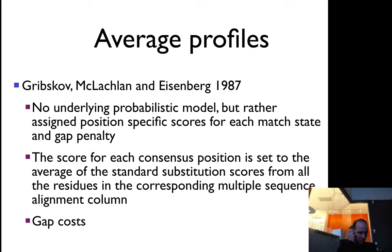One of them is developed by Gribbskopf and McLachlan and Eisenberg in 1987. They don't use a probabilistic model, but they are using an assigned score for each position. They have gap cost and basically the score for the position is set of the standard substitution scores from all other residues corresponding to the multiple sequence alignment column.